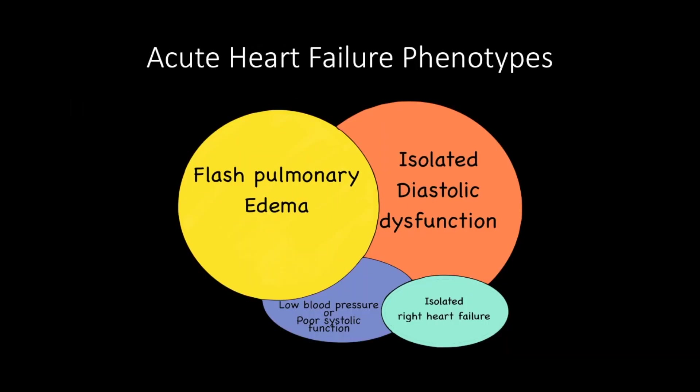There are four acute heart failure phenotypes covered in this module. The first is poor systolic function — patients with this phenotype are at risk of cardiogenic shock. On ultrasound, you would observe a plethoric IVC, B-lines, and poor left ventricular function.